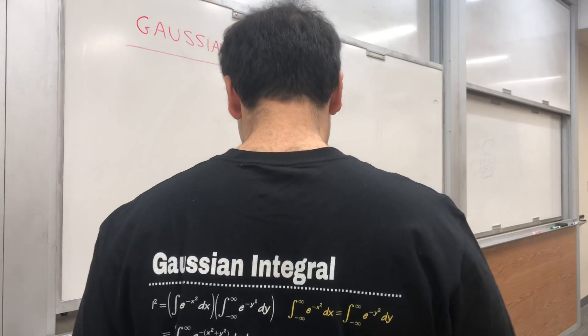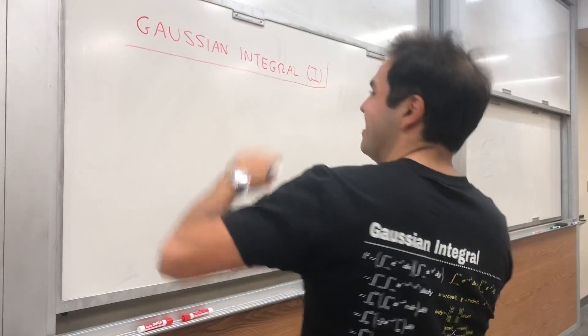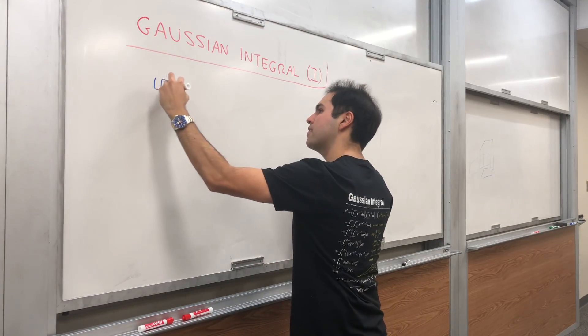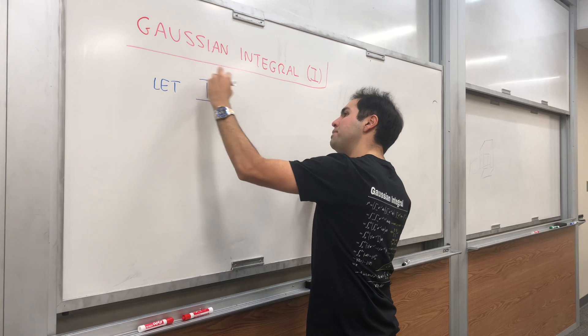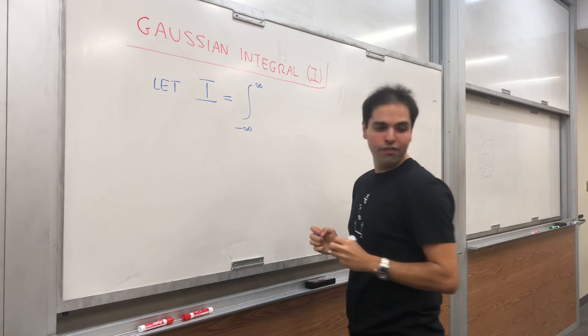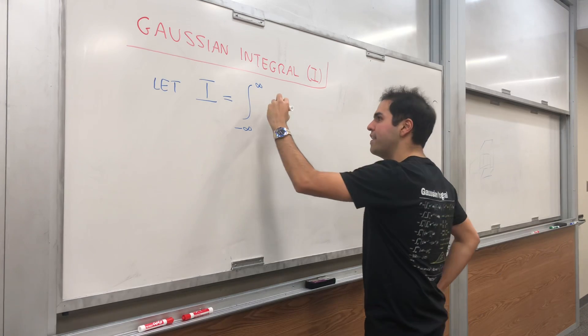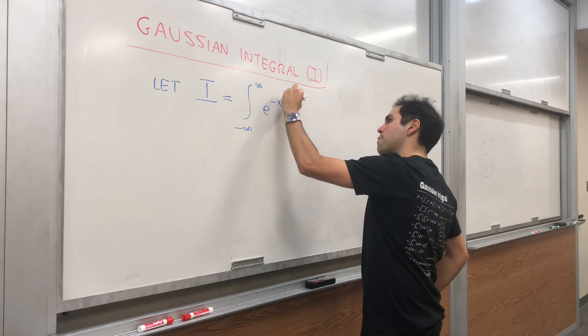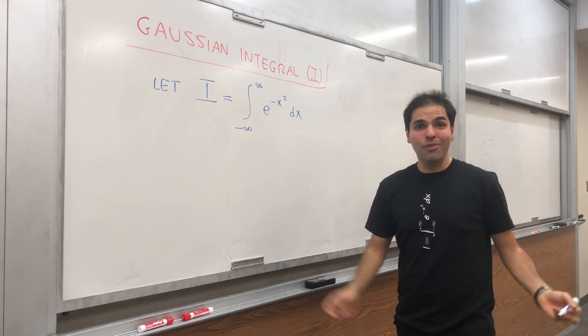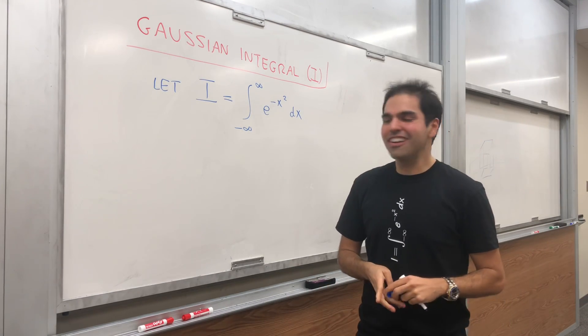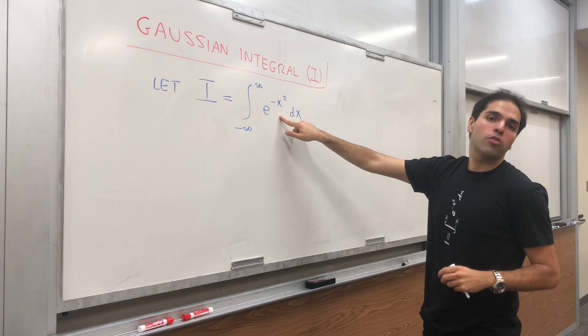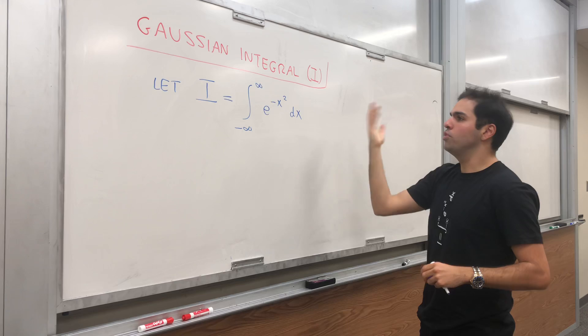Let I be the Gaussian integral: the integral from minus infinity to infinity of e^(-x²) dx. The thing that makes it work is based on this weird little trick that it doesn't matter which variable you use—you could use x, you could use y, you could use love, you could use banana, whatever.